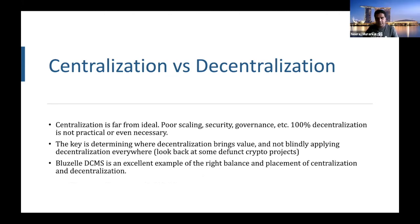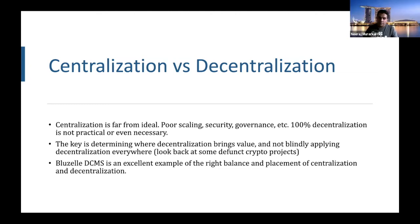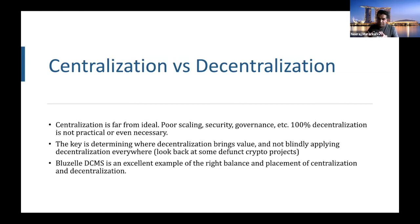Centralization versus decentralization — this is a theme for today. We all know we're in the blockchain space and centralization is not ideal: it's bad for scaling, security, governance, and there can be censorship. That's why we invented the blockchain. But we've also realized that decentralization is not 100% always applicable. You need to figure out where decentralization brings value and not blindly apply it everywhere. There have been ICOs and projects over the last few years that probably made the mistake of applying decentralization anywhere as if it were some sort of magic Midas touch. I believe BluZell, especially with our DCMS, is an excellent example of balancing the right placement of decentralization with the blockchain, and then using centralization for the off-chain application of web execution.